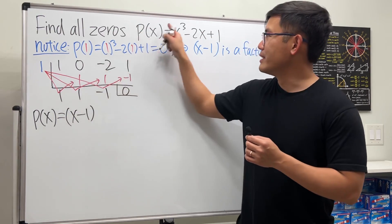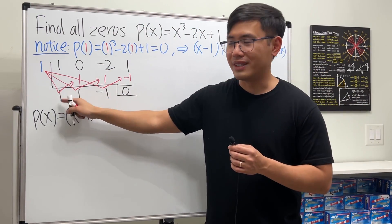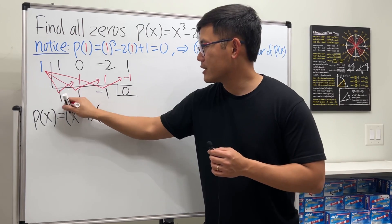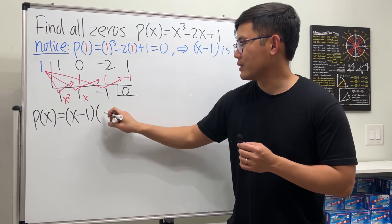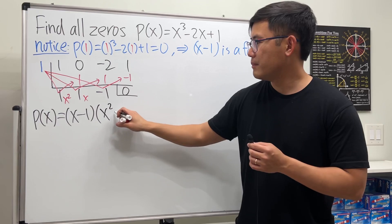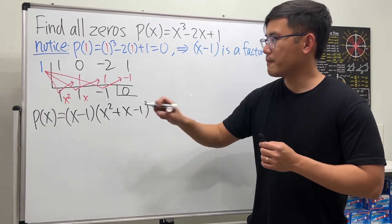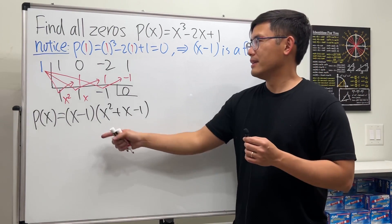Now we can say P(x) is equal to x minus one times x squared plus x minus one. All right, now to find the zeros, of course we'll just set this to be zero.